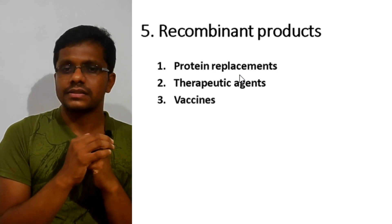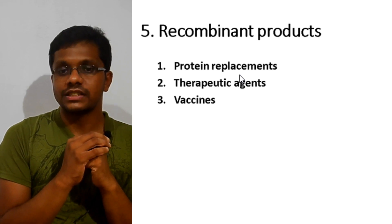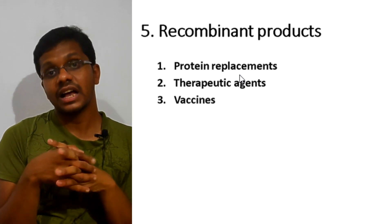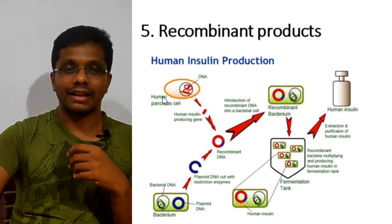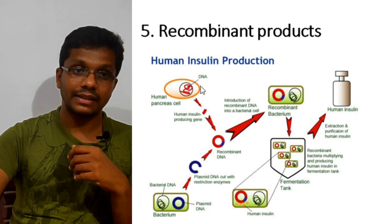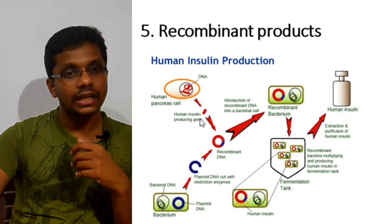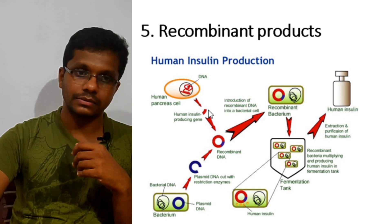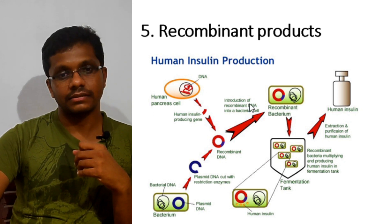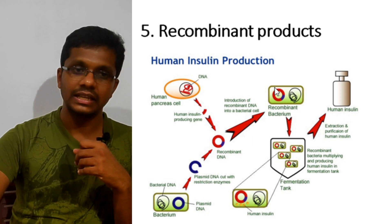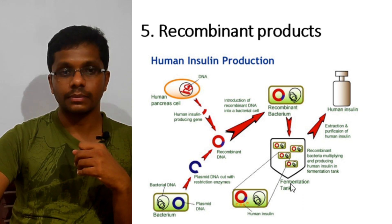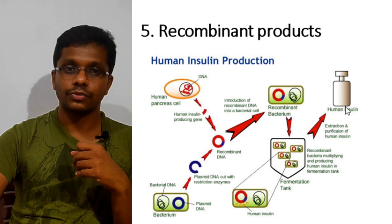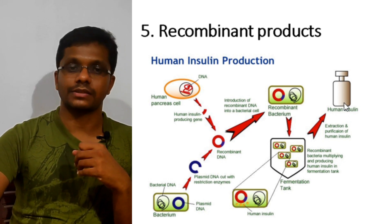The third category is vaccines — recombinant BCG vaccine, foot-and-mouth disease DNA vaccines, and influenza DNA vaccines are all recombinant products. A classical example is human insulin production: human pancreatic cell RNA is isolated, converted to DNA, and the insulin-producing gene is combined with a bacterial plasmid to create recombinant DNA. This recombinant DNA is transferred into a host bacterium, followed by selection and screening, then grown in bulk using industrial fermentation technology to produce human insulin for diabetic patients.